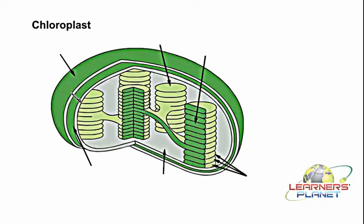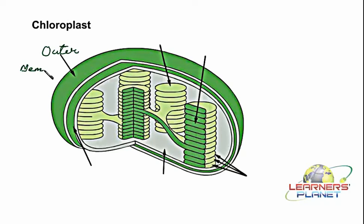We all know that chloroplast is a double membrane structure. If it is double membrane, then you have to label two parts: the outer membrane and the inner membrane. So let us start writing here — this first part of the chloroplast is the outer membrane. The other part here is the inner membrane, so let us label that now.